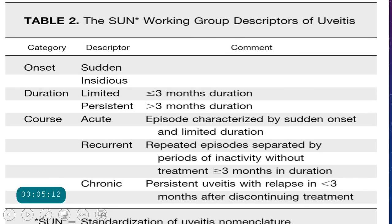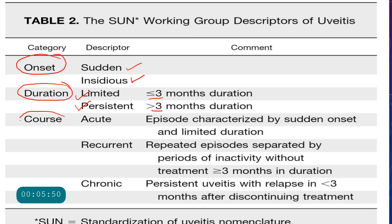Based on clinical presentation, the SUN working group also describes uveitis by onset, duration, and course. By onset, uveitis can be sudden or insidious. By duration, it can be limited (less than three months) or persistent (more than three months). By course, it can be acute — sudden onset with limited duration — recurrent, or chronic.